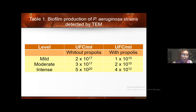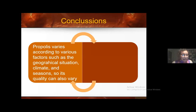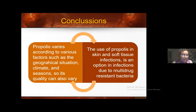Among these alternatives are natural substances such as propolis, which is a mixture of resins, waxes, essential oils, pollen, and microelements produced by bees. Propolis is not constant in its composition, but it has been shown to have antibacterial action and is capable of passing through biofilm pores to reach and kill the bacteria inside the matrix. So in biofilm infections, it could be a good treatment option.